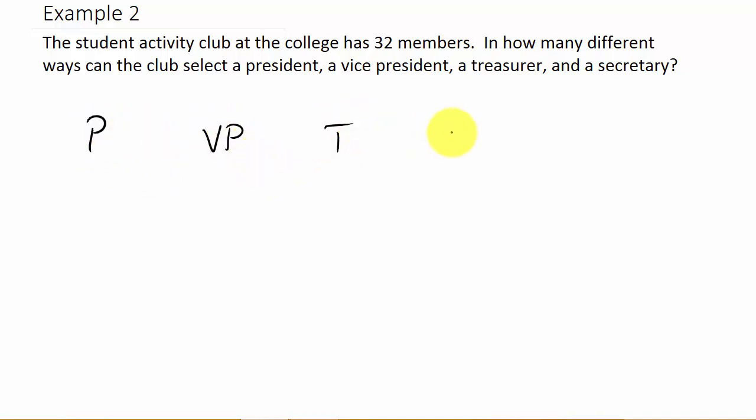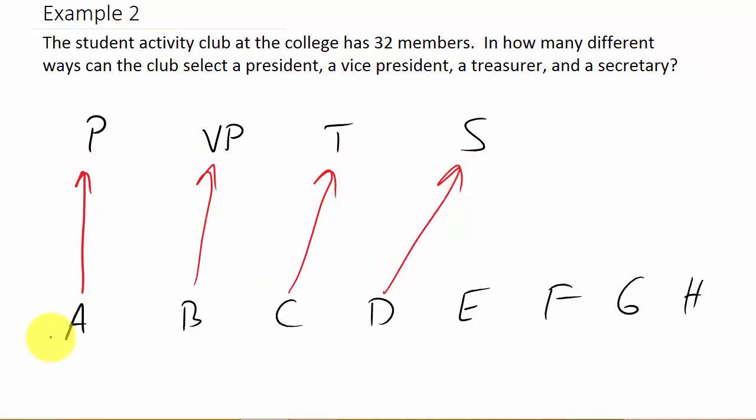What you have to look at here is we've got a president, a vice president, a treasurer, and a secretary, and I've got 32 members. Let's say I have person A, B, C, D, E, F, G, H and so on, 32 of them. I'm not going to write it all out, but let me show you how this is a permutation. Let's say I choose A first, then B, then C, then D. So A is president, B is vice president, C is treasurer, and D is secretary.